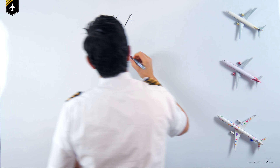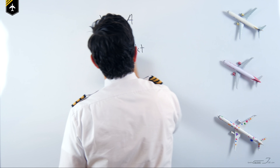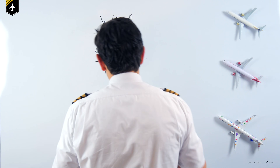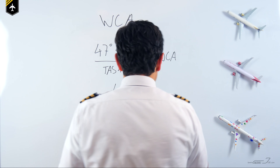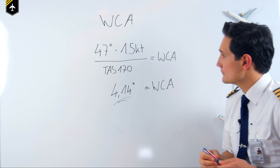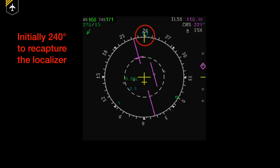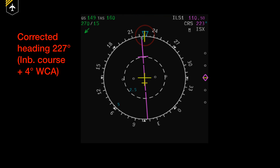You therefore have to calculate the wind correction angle. The wind direction minus your inbound course is 47 degrees, so 47 times the wind speed of 15, divided by the true airspeed, gives a wind correction angle of roughly 4 degrees. So you turn the heading bug to 227 degrees, but initially you have to recapture the localizer first by flying a greater heading — let's say 240 — and once you're back on the localizer you maintain the heading of 227 to correct for the wind.